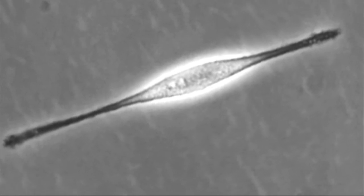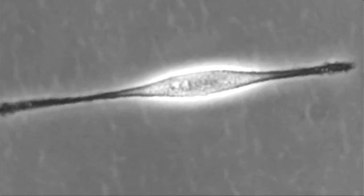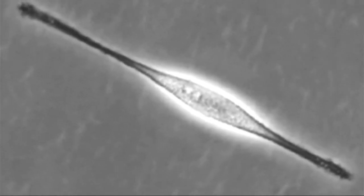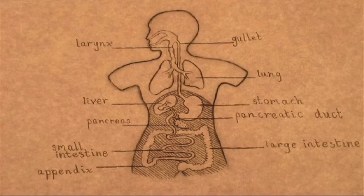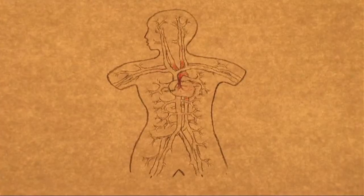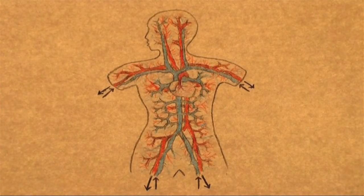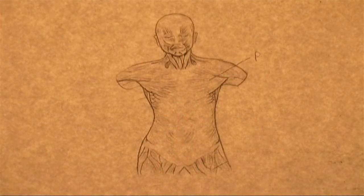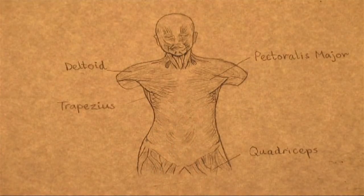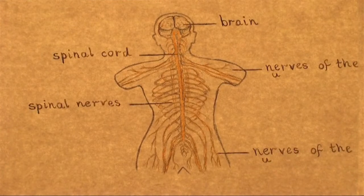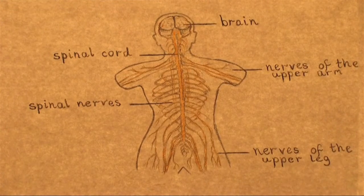Diese unterschiedlichen Zelltypen arbeiten in spezialisierten Teams. Einige transportieren Sauerstoff durch das Blutgefäßsystem. Einige sind für das Strecken und Zusammenziehen unserer Muskeln verantwortlich. Einige vermitteln Nachrichten zwischen unserem Gehirn und dem Rest unseres Körpers.